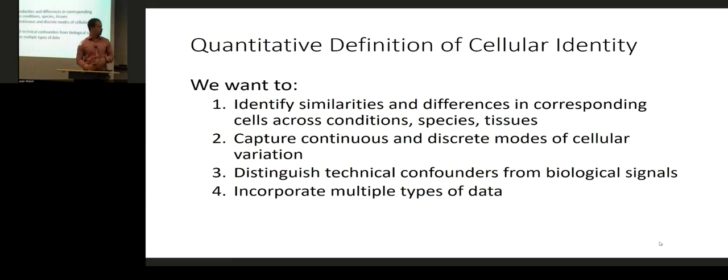In order to accomplish this, we want several properties. We want to be able to identify both similarities and differences in corresponding cells across conditions, species, and tissues. Part of the reason for this is because we want to understand the distinction between the invariant properties of a cell type — what makes it that cell type across settings — and the main modes of variation in which a particular cell type can vary, for example in response to treatments or environmental conditions.